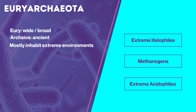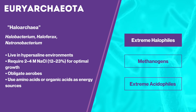Euryarchaeota includes different lifestyles: the strictly anaerobic methanogens, extreme halophiles, and extreme acidophiles. They may be gram-negative or gram-positive, dependent on the presence of pseudomurein in their cell wall. Let's take a look at each of these groups.